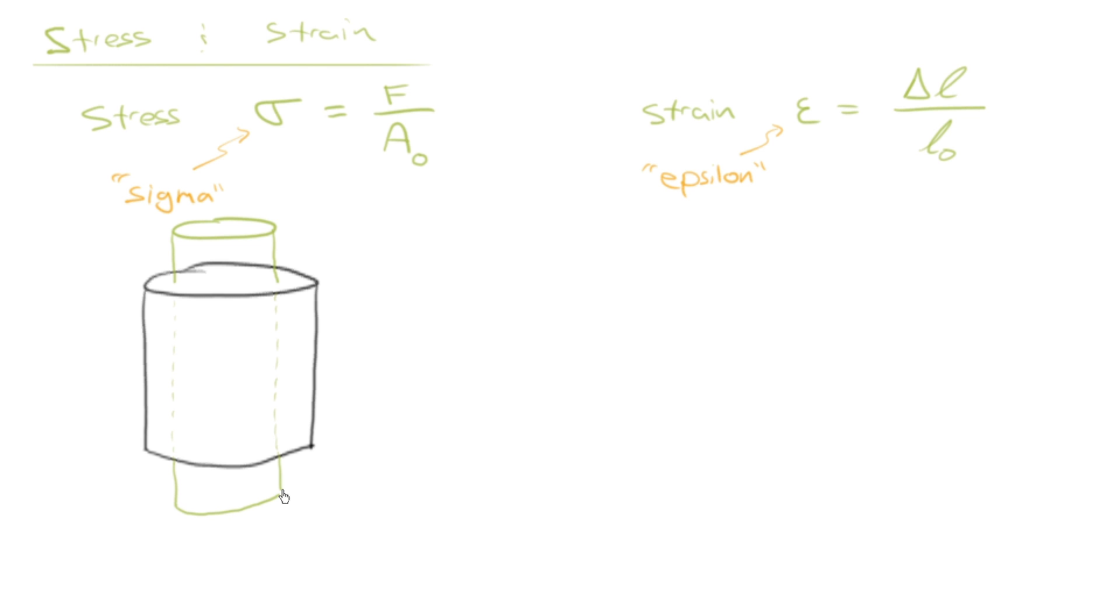In this case, the load is being applied along the long axis of this cylinder. Well, that's a bad sketch. There we go. Okay, so here we go. We're going to write that little force in there. So the black is unloaded. And the green color here is while the sample is loaded.